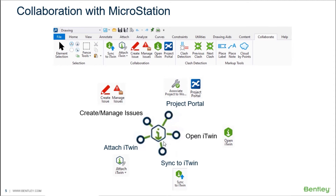Project collaboration between team members who are spread out geographically, or in different teams from different disciplines using various design applications, is made possible by the iTwin Synchronizer. Team members can synchronize their design changes from a design file to an iModel in the iModel Hub using the iTwin Synchronizer.